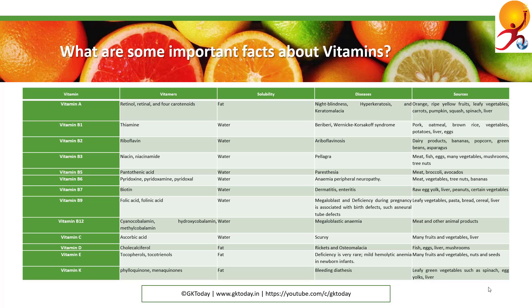Vitamin B6 vitamins are pyridoxine, pyridoxamine, and pyridoxal. It is soluble in water. Deficiency can cause anemia and peripheral neuropathy. It can be found in meat, vegetables, tree nuts, and bananas.